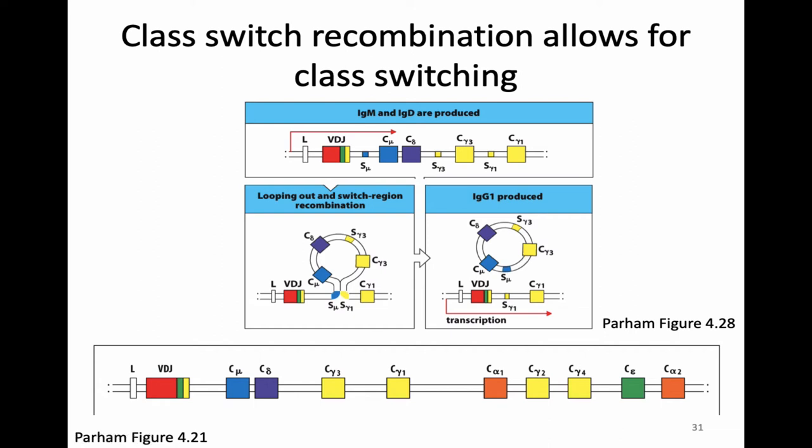A student asked whether RAG was turned off but is somehow used here. In fact, RAG is turned off — a different set of enzymatic machinery does this class switch recombination, not RAG. It's also worth noting that there is a switch site before IgD, so B cells can delete out the mu constant region and switch to making just IgD.